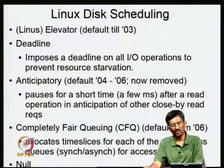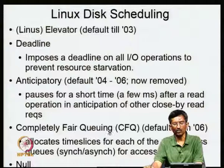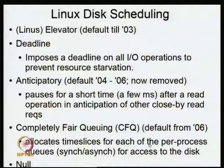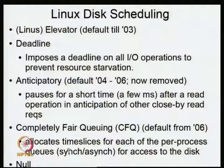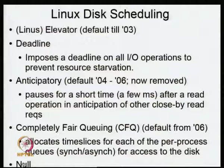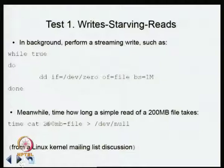In the recent past there has been a lot of work on disk scheduling. Linux had the elevator algorithm as default in 2003. There is also a deadline scheduler that imposes a deadline on all IO operations to prevent resource starvation. The anticipatory scheduler — once used in Linux but since removed — anticipates that after a disk operation another nearby operation will follow, so it waits briefly before moving on. Completely Fair Queuing (CFQ) allocates time slices for per-process queues for both synchronous and asynchronous requests.